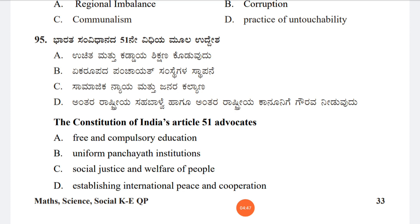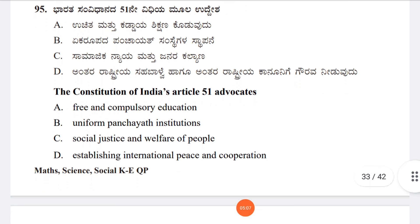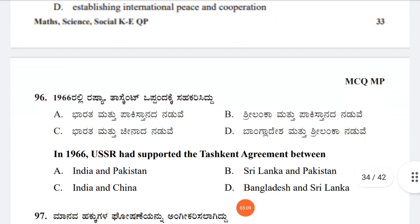Question 95: Article 51 of the Constitution of India advocates Option A: Free and compulsory education, Option B: Uniform Panchayat institutions, Option C: Social justice and welfare of people, Option D: Establishing international peace and cooperation. The answer is Option D, establishing international peace and cooperation.